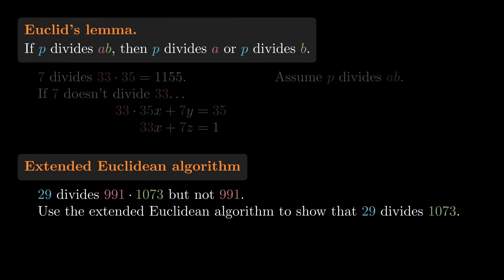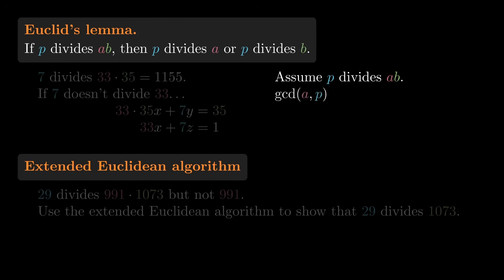That's a lot of steps, so here's an example you can try on your own. The same argument establishes Euclid's Lemma in general. Assume that the prime P divides A times B. To show that it divides A or B, let's look at the GCD of A and P. Since this GCD is a divisor of P, and P is a prime, there are only two possibilities.